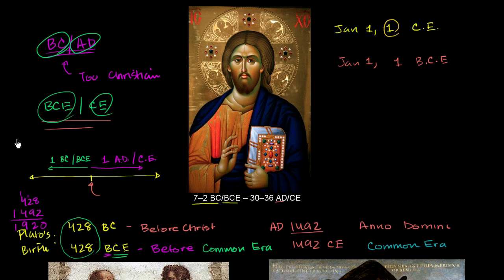So January 1, 1 AD — or 1 in the Common Era — is right over here. And January 1, 1 BCE is exactly one year before that. So there's only one year difference.